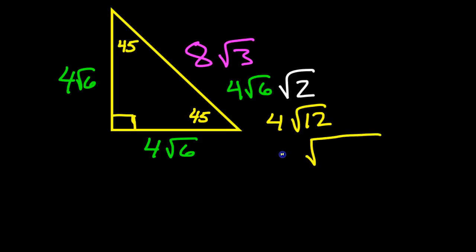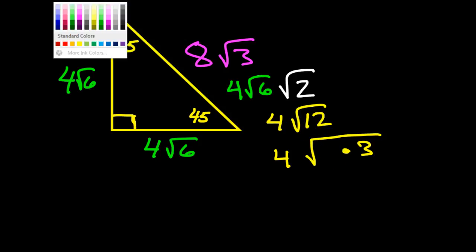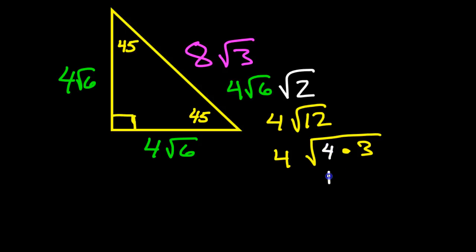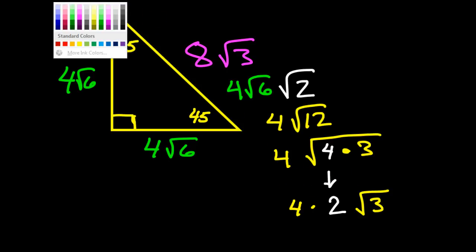Because radical 12 can be rewritten as radical four times three. Because 12 is four times three. I'm just simplifying the radical 12. The square root of four is two. So what's about to happen is that this four is going to simplify and come out of the radical and become a two. So now I have four times two.